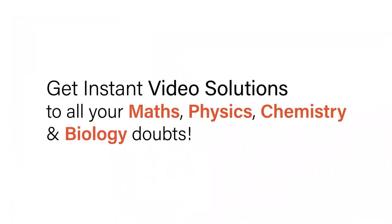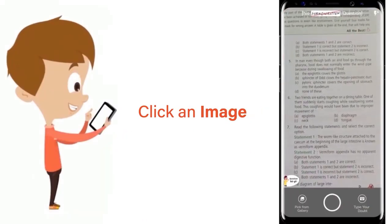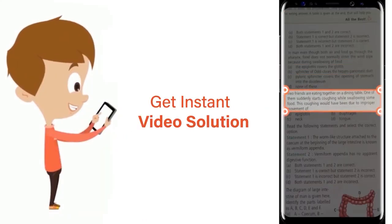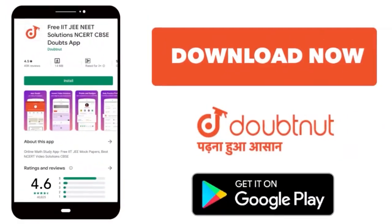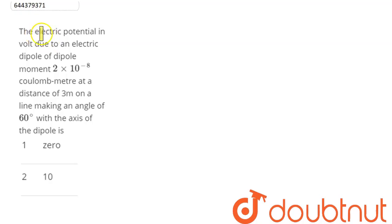With Doubtnet get instant video solutions to all your maths, physics, chemistry and biology doubts. Just click the image of the question, crop the question and get instant video solution. Download Doubtnet app today. The question is: the electric potential in volt due to an electric dipole